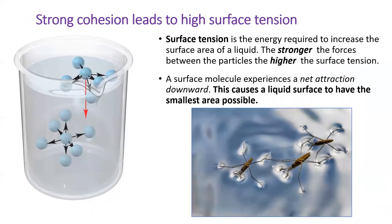Cohesive forces also explain the final liquid property in this lesson: surface tension. Water molecules are held together by strong intermolecular forces, which cause water to minimize its surface area. These IMFs create what seems to be an elastic skin on the surface of water. In order for something to sink into the water, it has to break the cohesive water-water bonds, increasing water's surface area — an unfavorable process. Some insects are able to suspend themselves on water because their weight is not enough to break through water's surface tension.